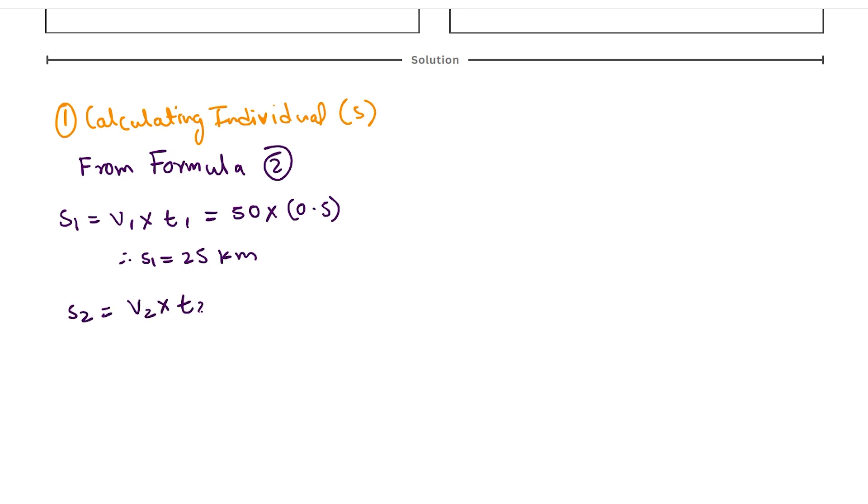Similarly I'll also calculate the other two distances. s2 will be v2 into t2 and that will be 30 into 0.25 and this gives s2 to be 7.5 kilometers. And then for the remaining, that is our last distance s3, which is speed in part 3 into time duration for part 3. Speed in part 3 was 70 kilometers per hour and time duration was 0.75 hour so s3 comes out to be 52.5 kilometers.